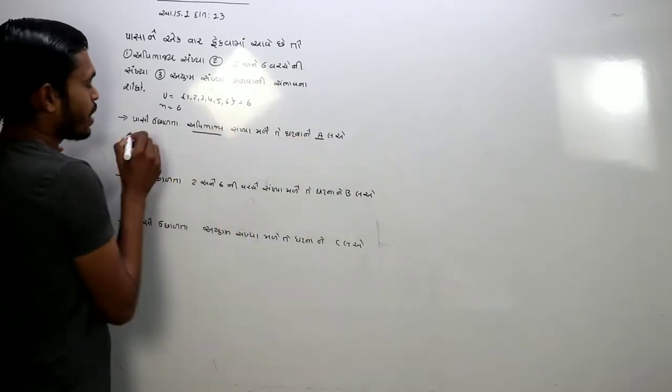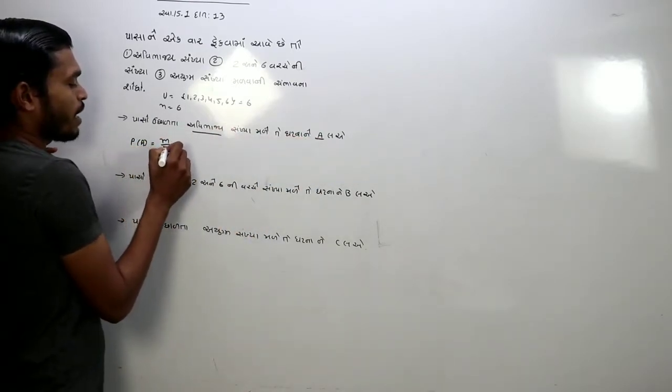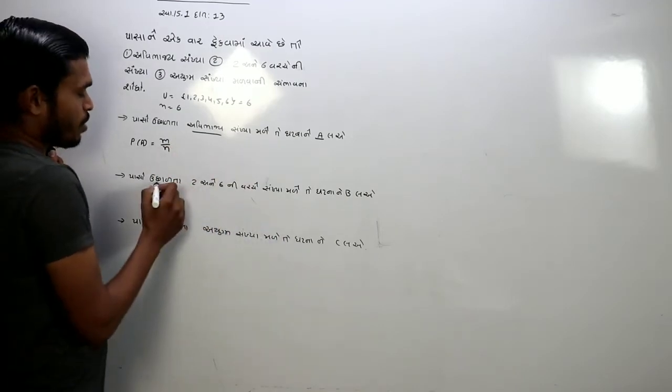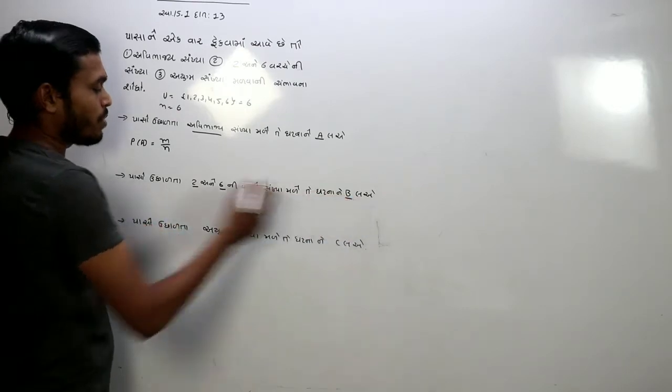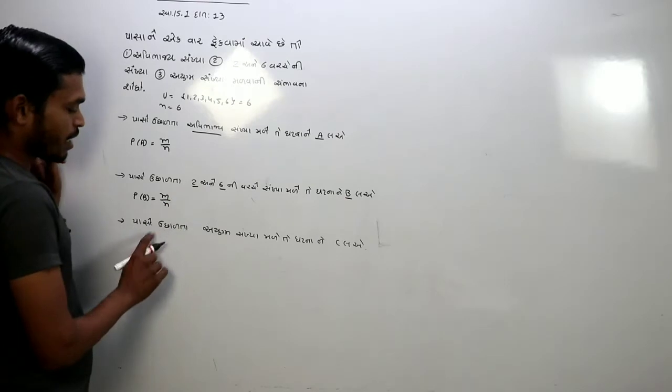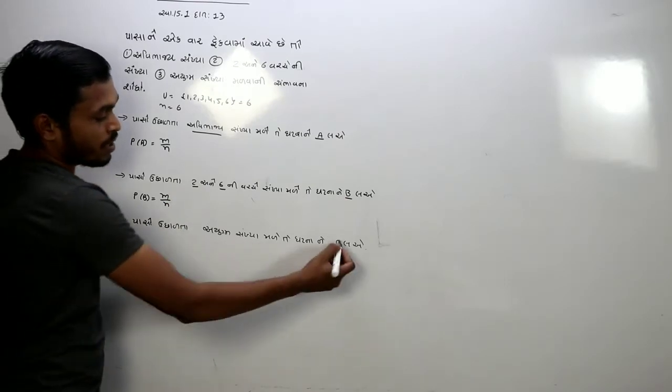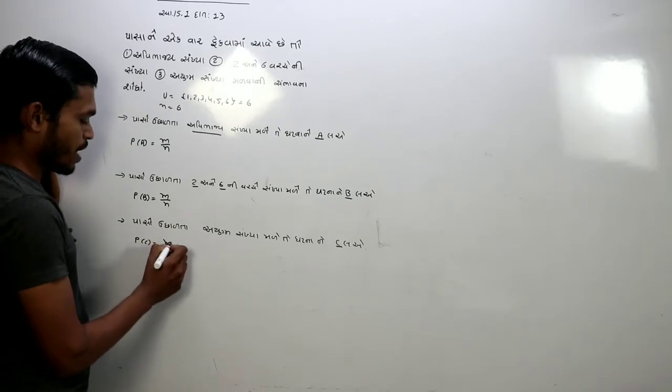પાસો ઉછાળતા અભાજ્ય સંખ્યા મળે તે ઘટના ને P(C) દર્શાવું છે. બરાબર એમ ભાગ્યા (We denote by P(C) the event of getting a prime number when throwing the dice. Correctly divides like this).